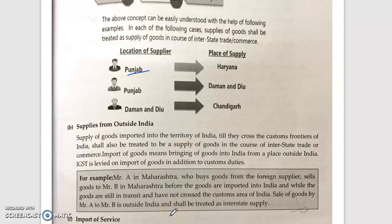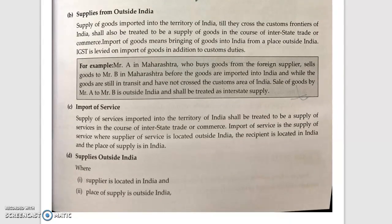For example, Mr. A in Maharashtra buys goods from a foreign seller and sells the goods to Mr. B in Maharashtra. We might think it is intrastate, but it is a different case. Before the goods are imported into India, while the goods are still in transit and have not crossed the customs area of India, customs duty has not been paid. So the sale from Mr. A to Mr. B in Maharashtra is to be considered as interstate trade or commerce.